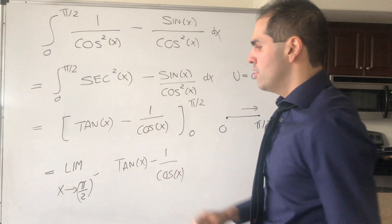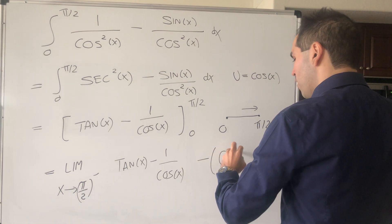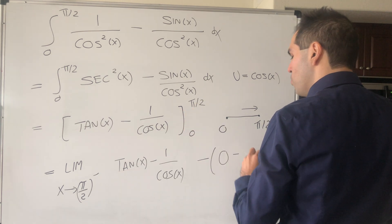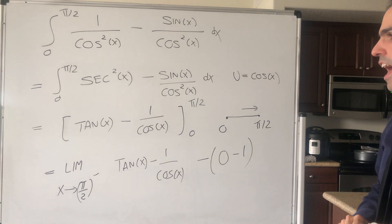And then, so just the stuff at 0, so minus tangent of 0, which is 0, minus 1 over cosine of 0, which is 1. So remember, whatever you find at the end, add 1.